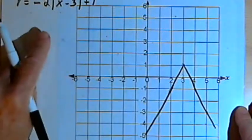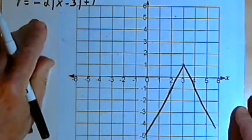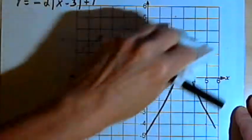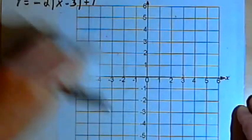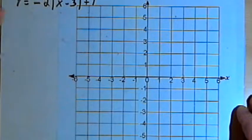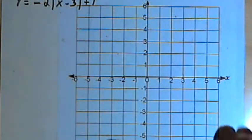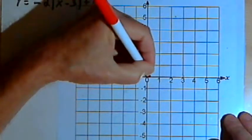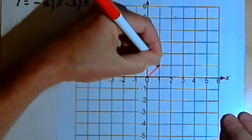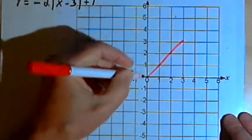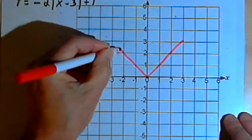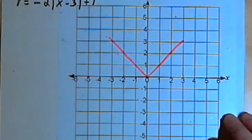Now if this seems a little too complicated for you, here's another way you could do it. We could draw in the original, the basic or parent function, which is just the absolute value of x.